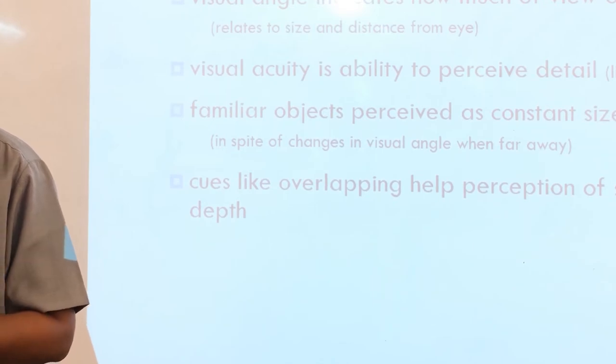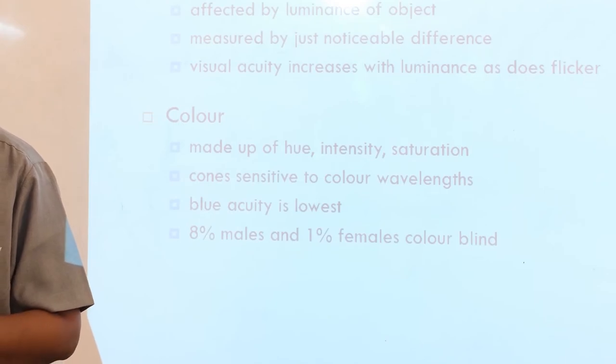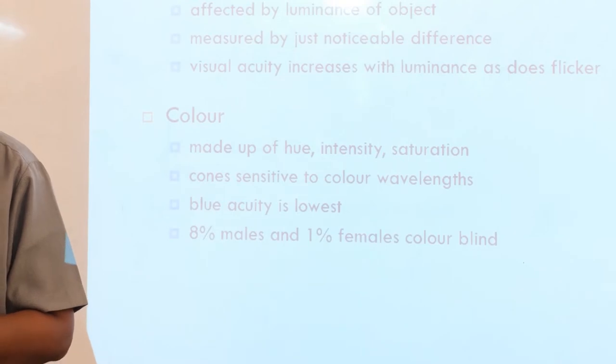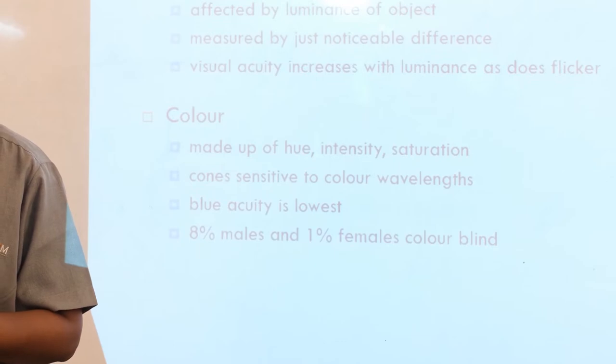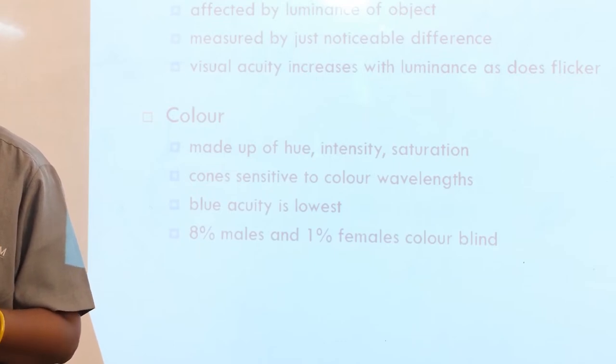Then color is made up of hue, intensity and saturation. Cones are sensitive to color wavelength. Blue accuracy is at lowest. These are the eye vision properties of brightness and color.